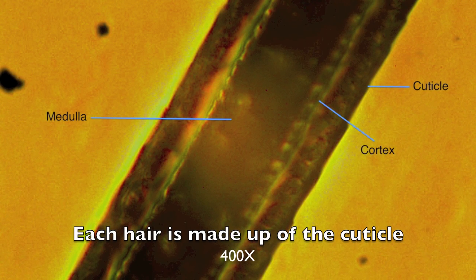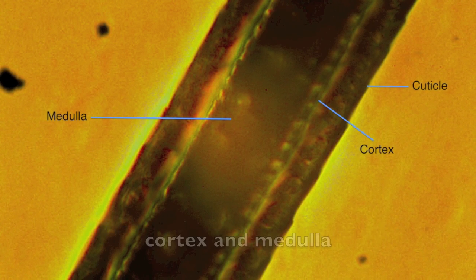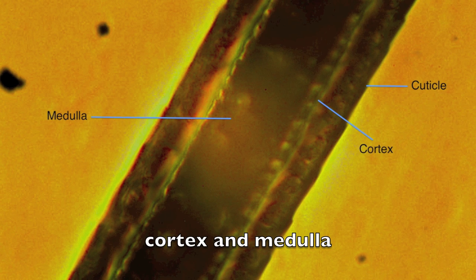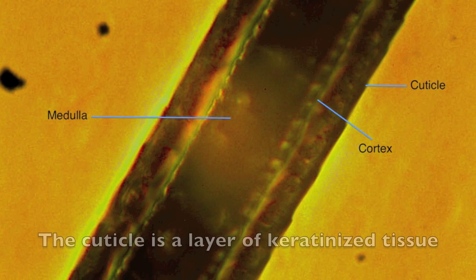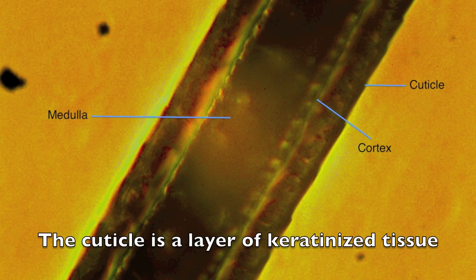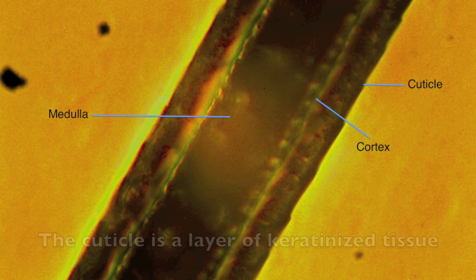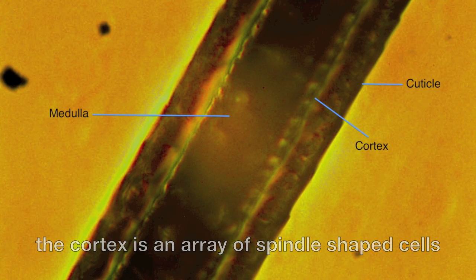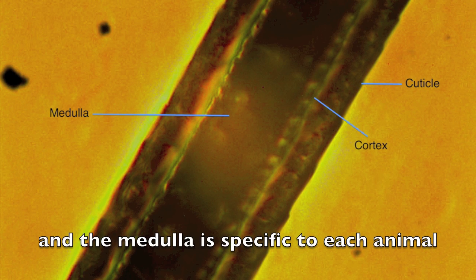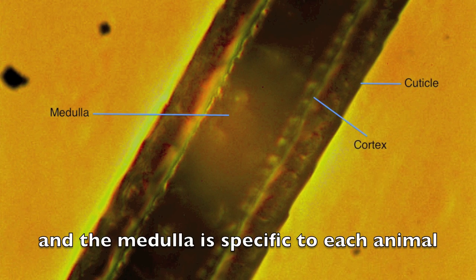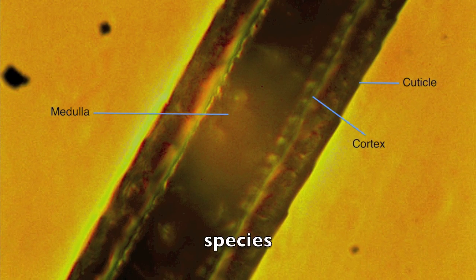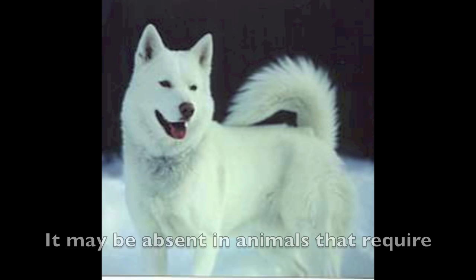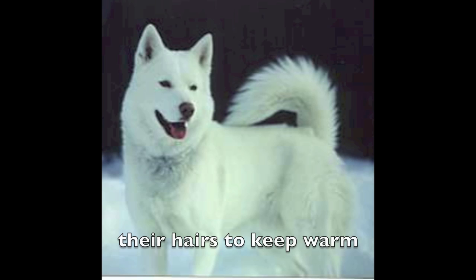Each hair is made up of the cuticle, the cortex, and the medulla. The cuticle is a layer of keratinised tissue. The cortex is an array of spindle-shaped cells, and the medulla is specific to each animal species.